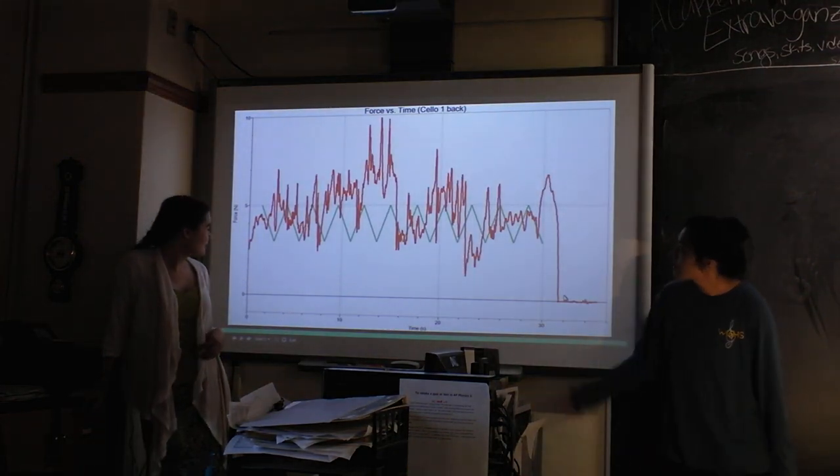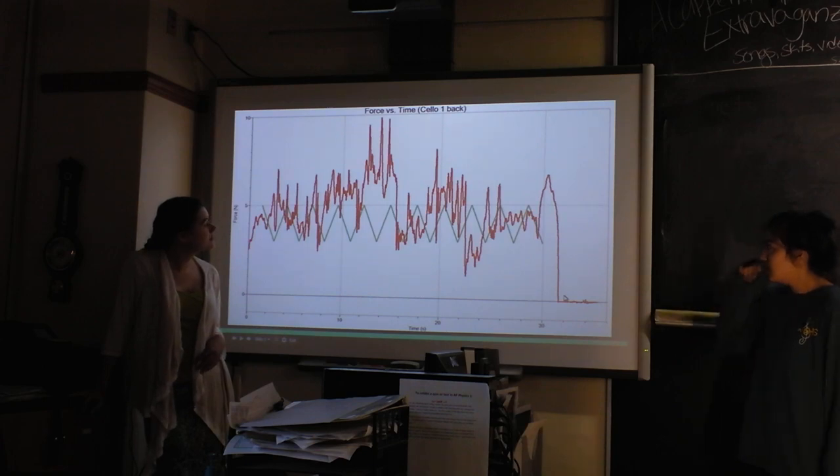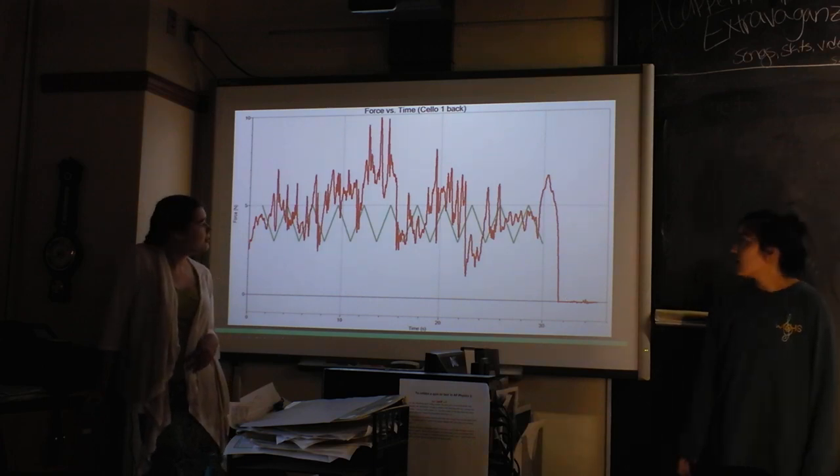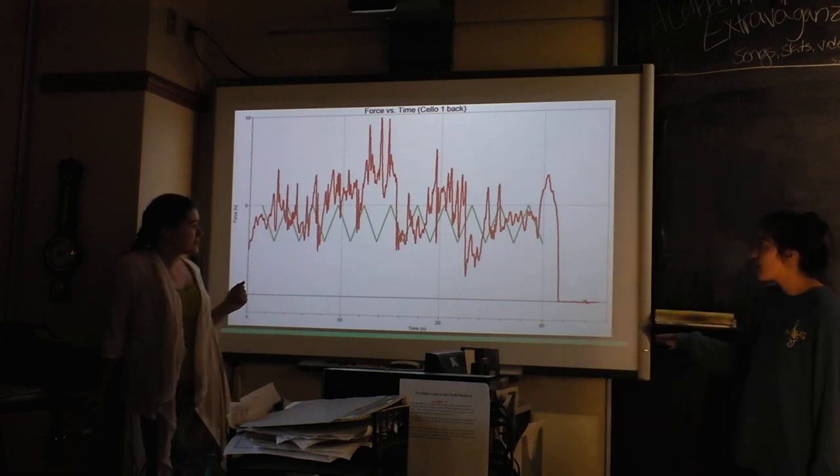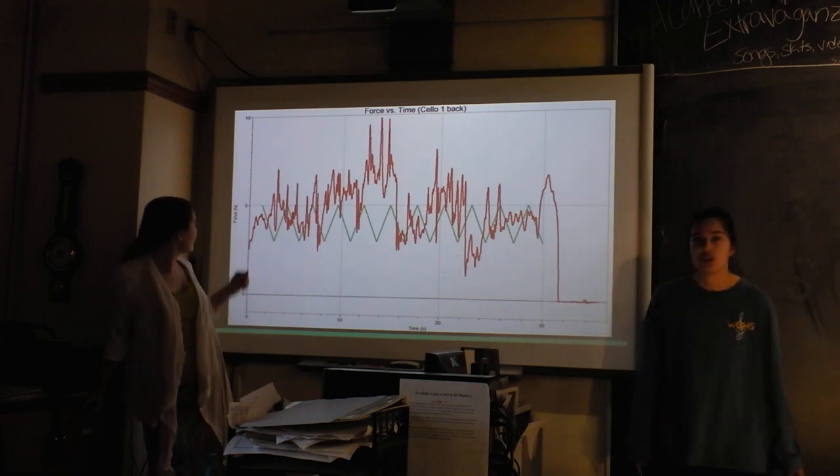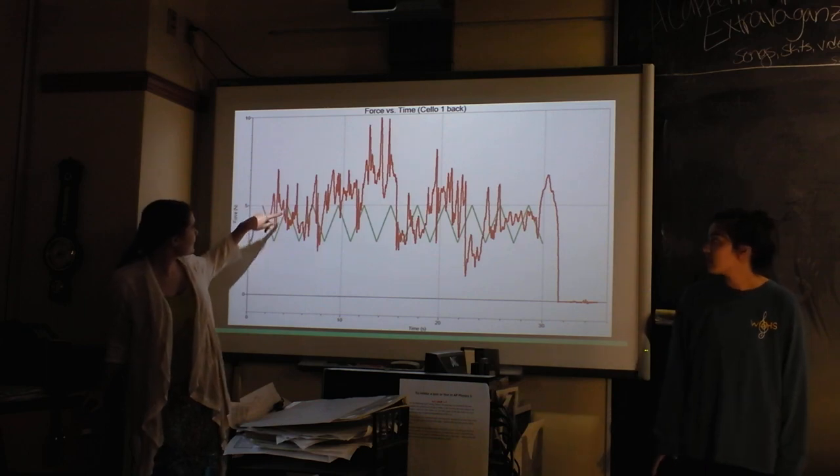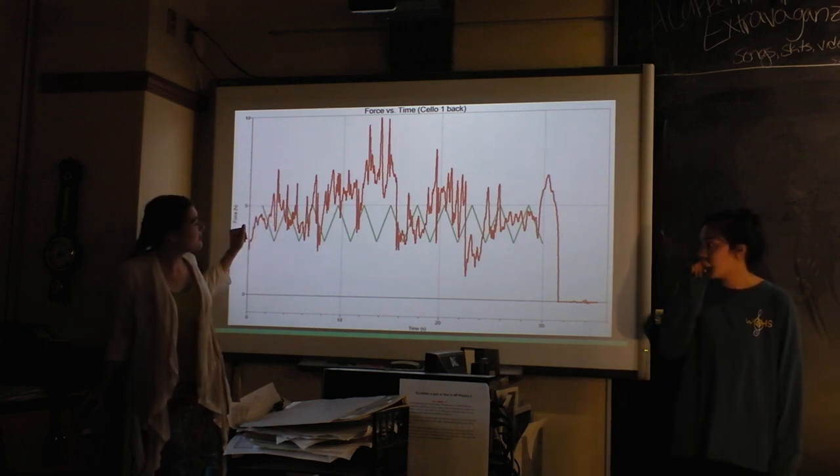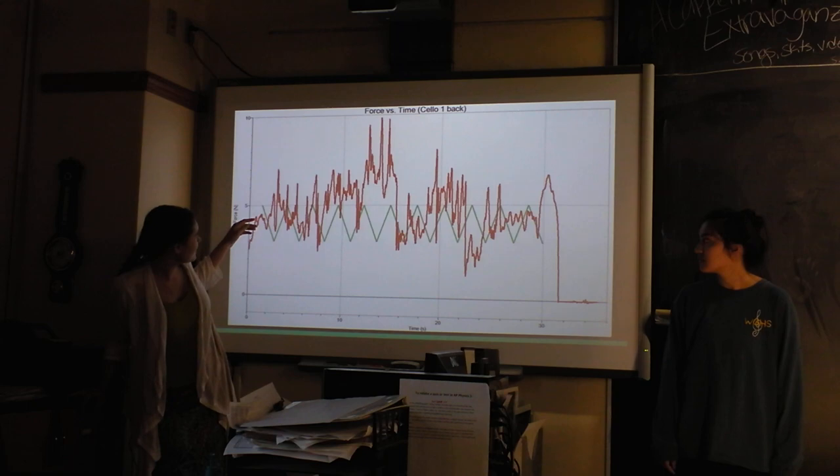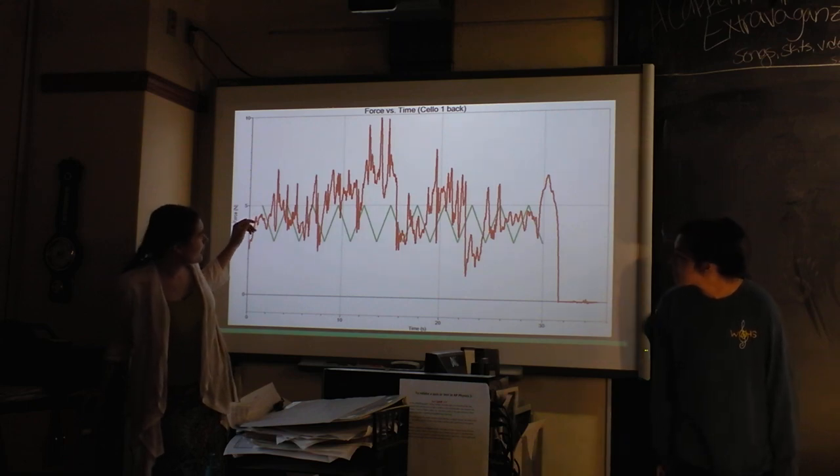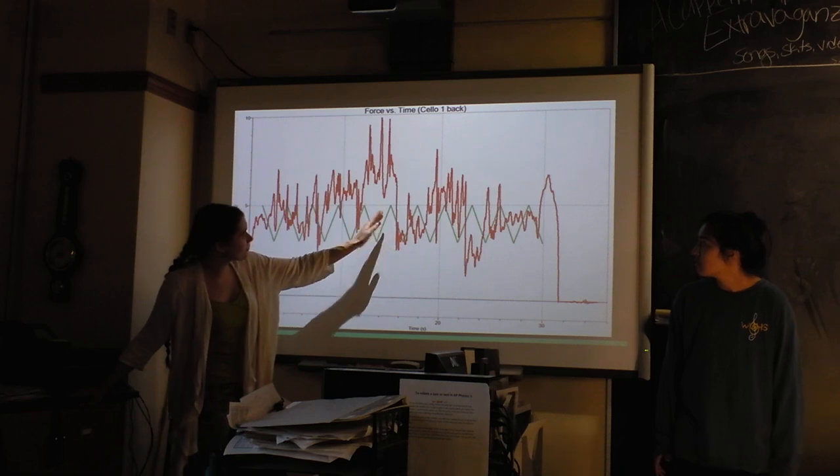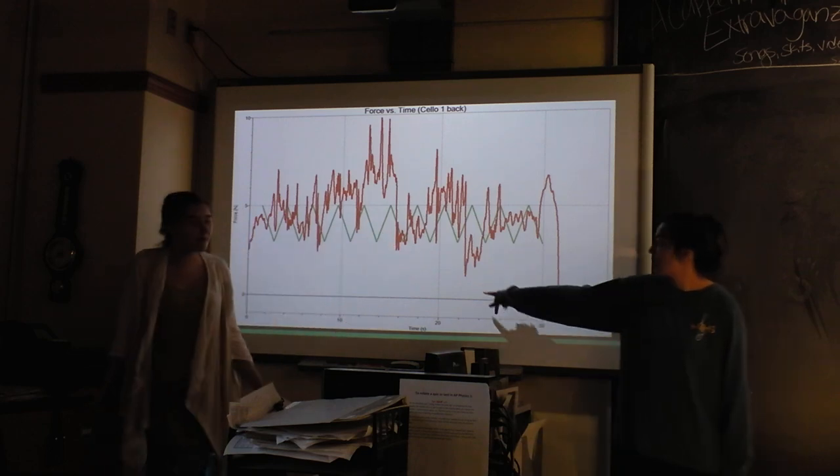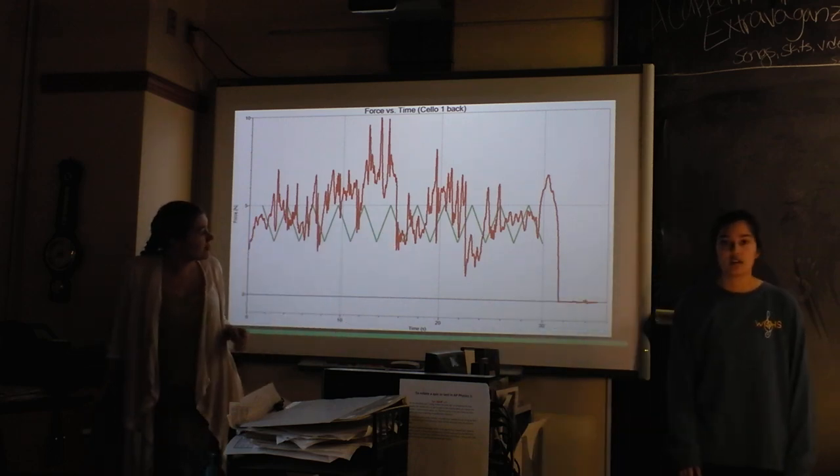This is an example of a graph we made of force over time. The red part shows the force, and the green part is when we changed notes. Each of these peaks or valleys is where the note changed. Right when we changed note, the force dropped off immediately, and we found that was a general trend of the graph.